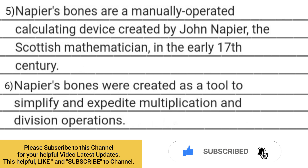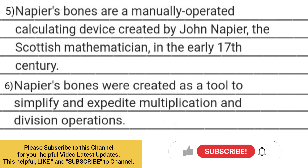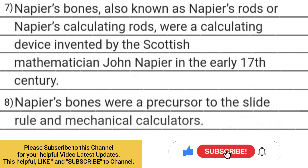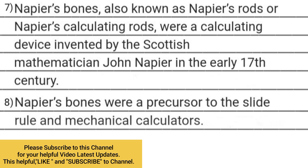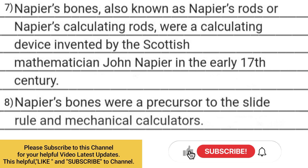6. Napier Bones were created as a tool to simplify and expedite multiplication and division operations. 7. Napier Bones, also known as Napier's rods or Napier calculating rods, were a calculating device invented by the Scottish mathematician John Napier in the early 17th century.